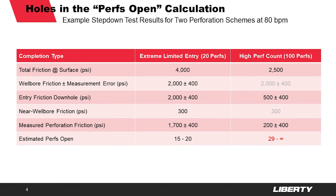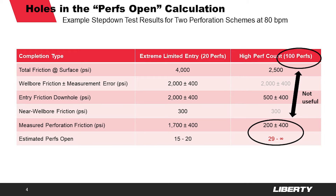It can be different though if we already have a high perforation count, say 100 perforations. If all other things are the same as the previous example but the only number that's different is perforation friction, then all of a sudden the amount of perforation friction that's measured is relatively small in comparison to the measurement uncertainty in that perforation friction. That results in a large range in the estimated perforations that are open — in this particular case anywhere between 29 and an infinite number of perforations. That's simply not a very useful assessment of how many perforations are open.